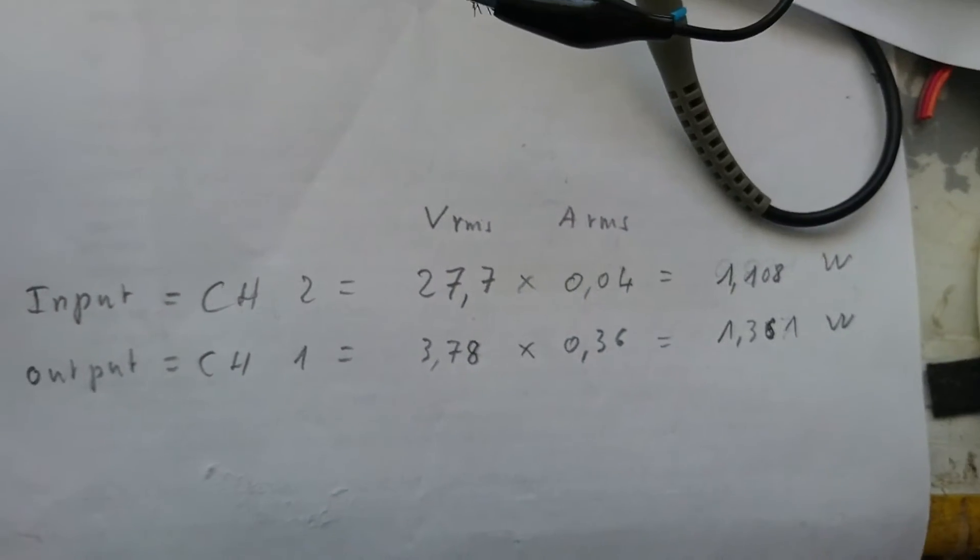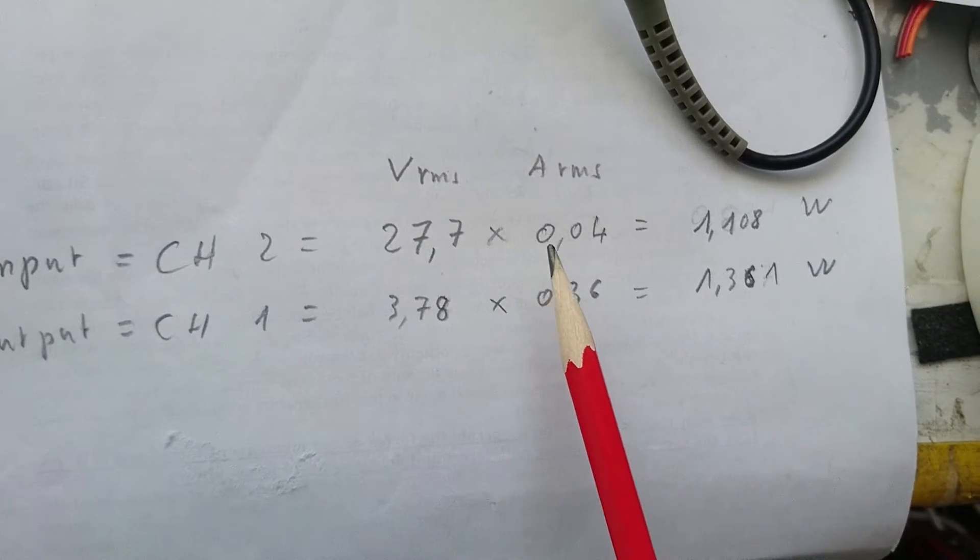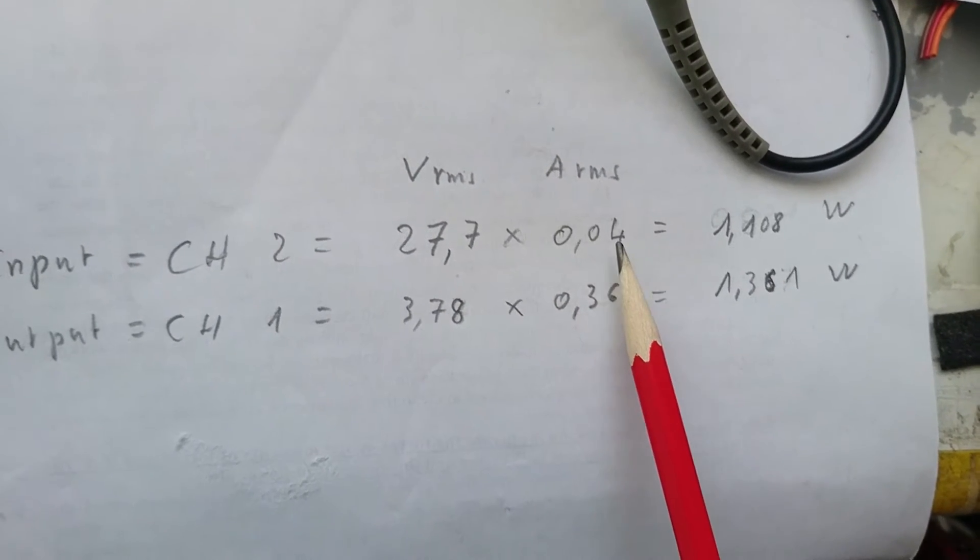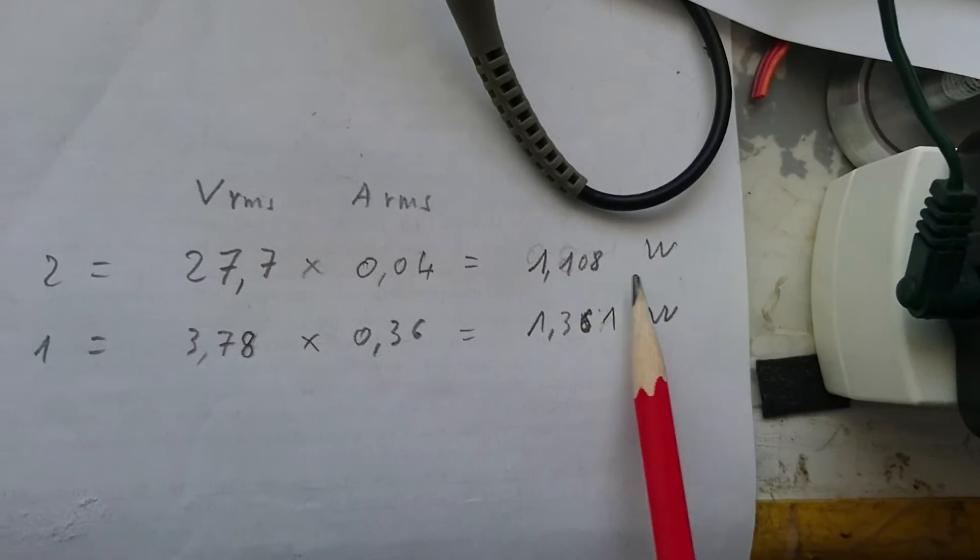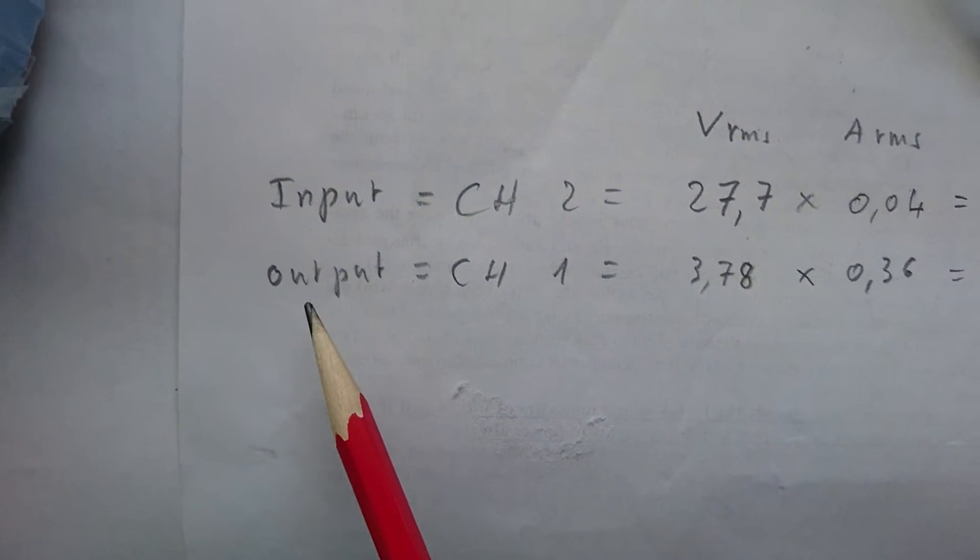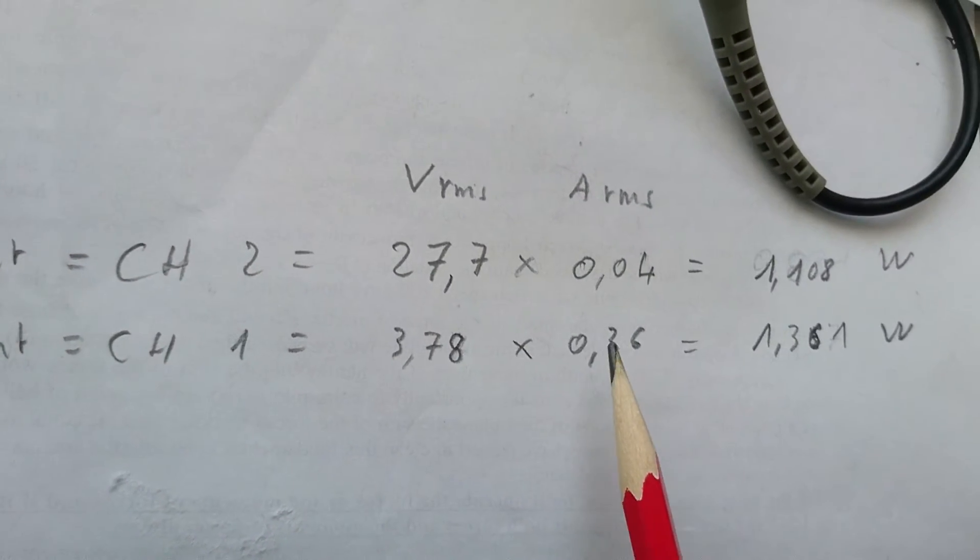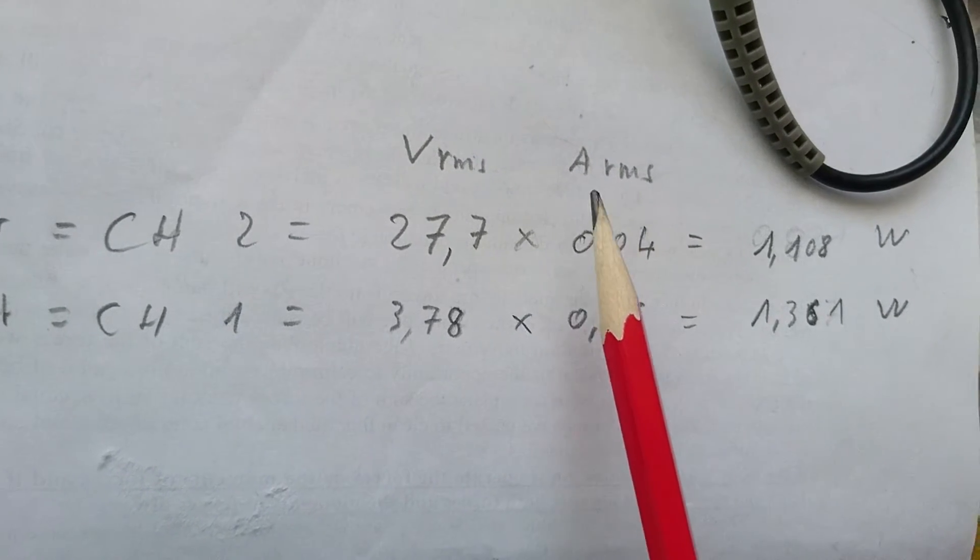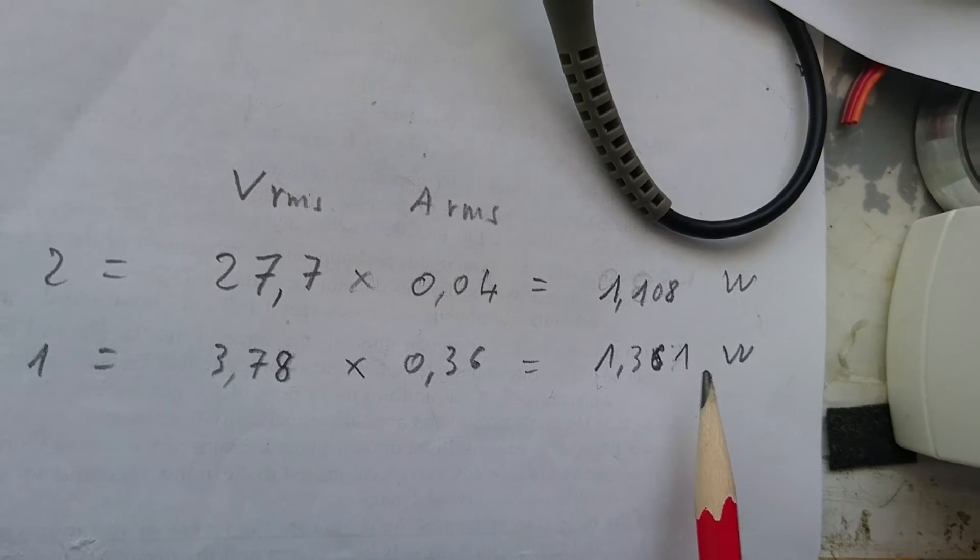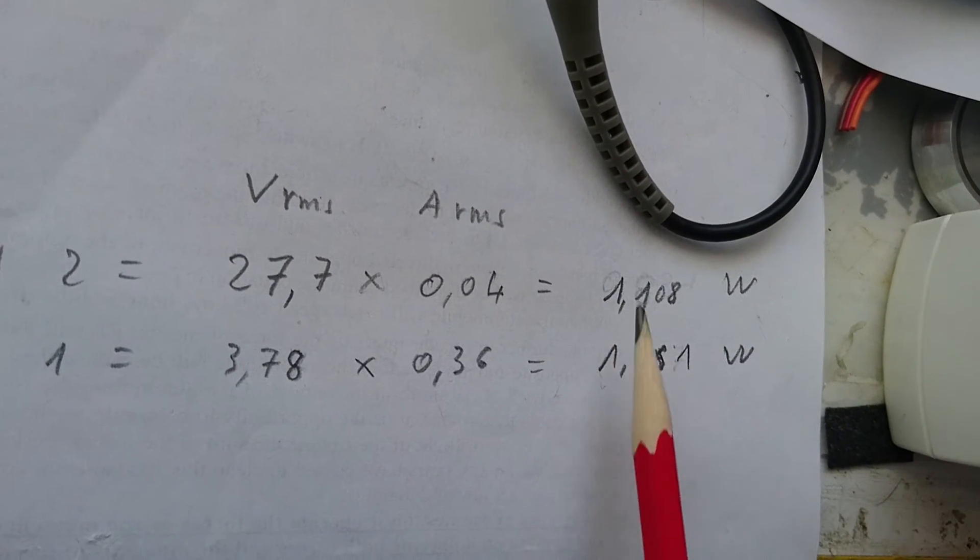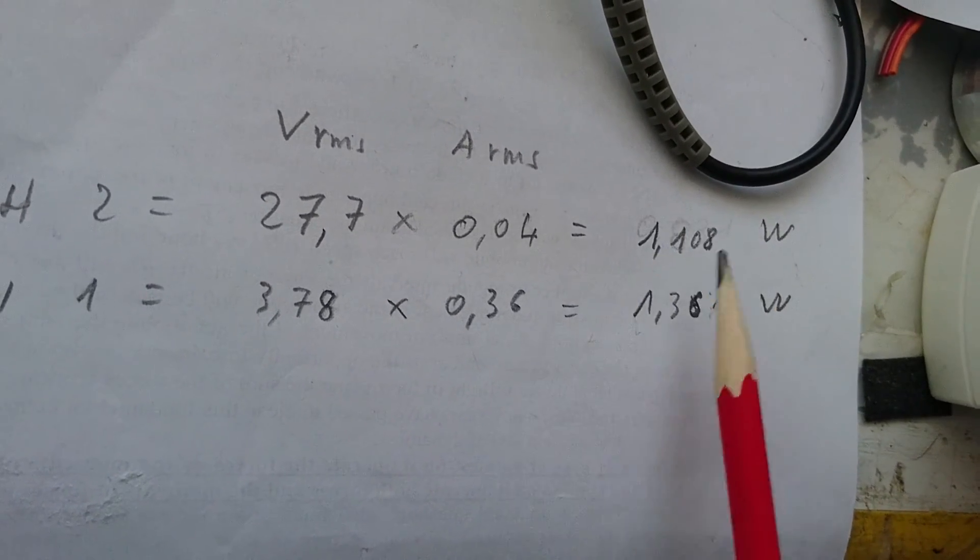Here you see that input power is 27.7 volts RMS times 40 milliamps RMS, which is 1.108 watts. The output is 3.78 volts RMS times 0.36 amps RMS, which is 1.361 watts. You see there is a small difference, but it is more output wattage than input wattage.